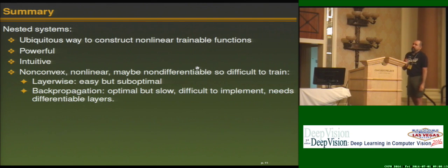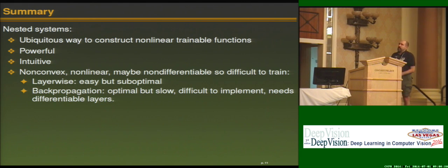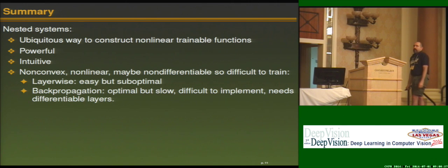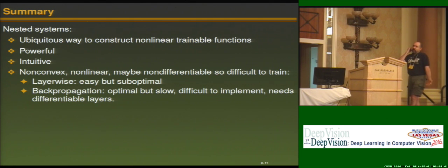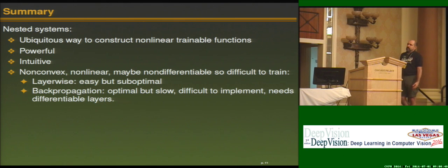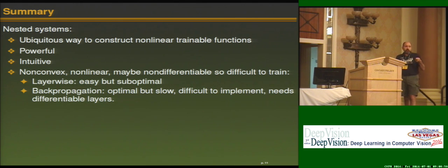In summary, nested systems are a ubiquitous way to construct non-linear trainable functions. They work very well and can generate very complex, somewhat intuitive functions. Unfortunately, the optimization is difficult because they are non-convex, non-linear, and maybe non-differentiable. The two ways they are usually trained are: layer-wise — easy but suboptimal — or using backpropagation of the gradient, which eventually converges to a stationary point but is slow, difficult to implement, and needs differentiable layers.